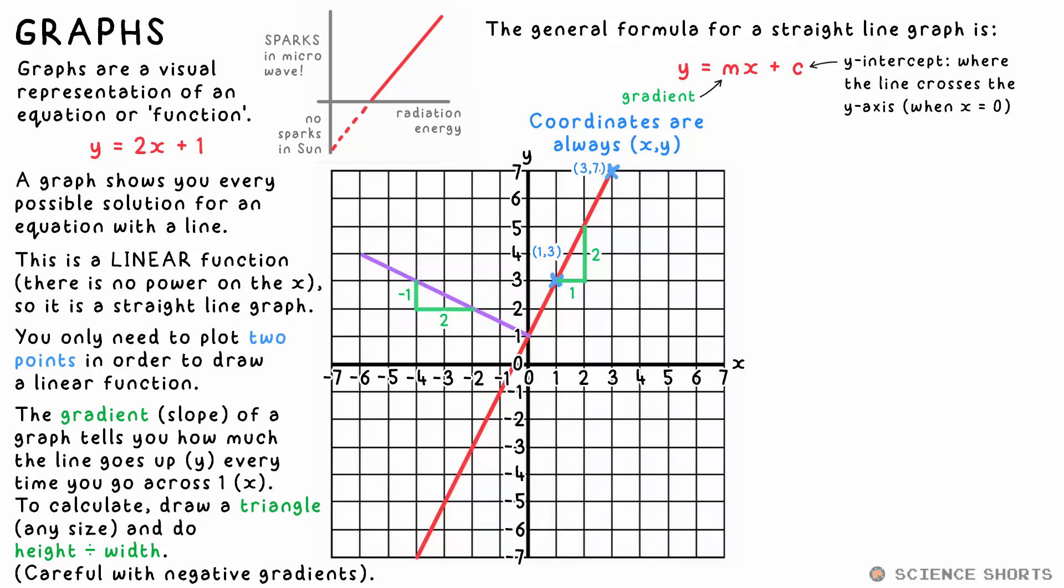Again, be careful as the y intercept could be a negative number. If you have two parallel straight lines, their equations will be different, but their gradients must be the same. That means they'll never meet.